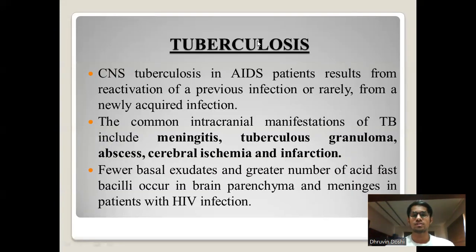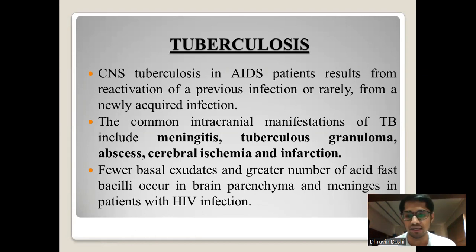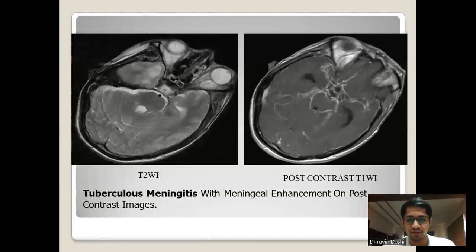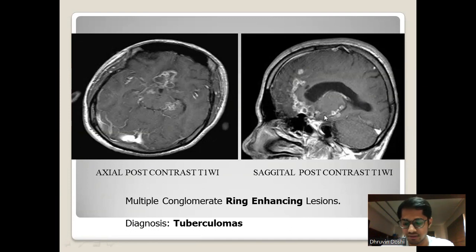The next condition is tuberculosis, which is most common. CNS tuberculosis in AIDS patients results from reactivation of previous infection or rarely from newly acquired infection. Common intracranial manifestations include meningitis, tuberculoma, granulomas, abscess, cerebral ischemia, and infarctions. Fewer basal exudates and greater numbers of acid-fast bacilli occur in brain parenchyma and meningitis in HIV patients. On T2-weighted and post-contrast studies, meningeal enhancement is seen. Classic ring-enhancing lesions representing tuberculomas are clearly seen on post-contrast axial and sagittal sections, confirming the diagnosis of tuberculomas.